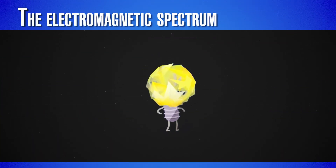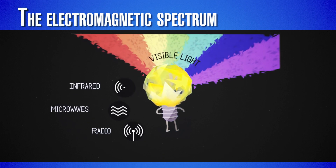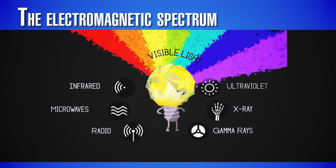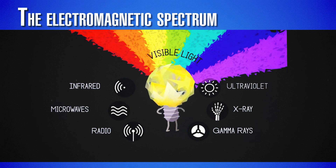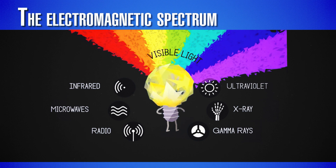The electromagnetic spectrum refers to many types of radiation emitted from the stars such as our sun. It takes many forms such as radio waves, X-rays and gamma rays. Visible light is also part of the electromagnetic spectrum.